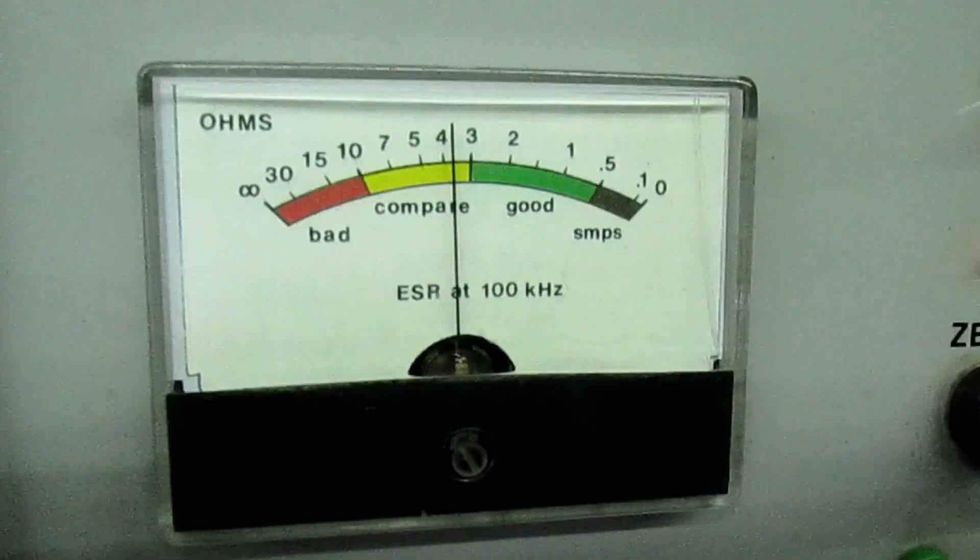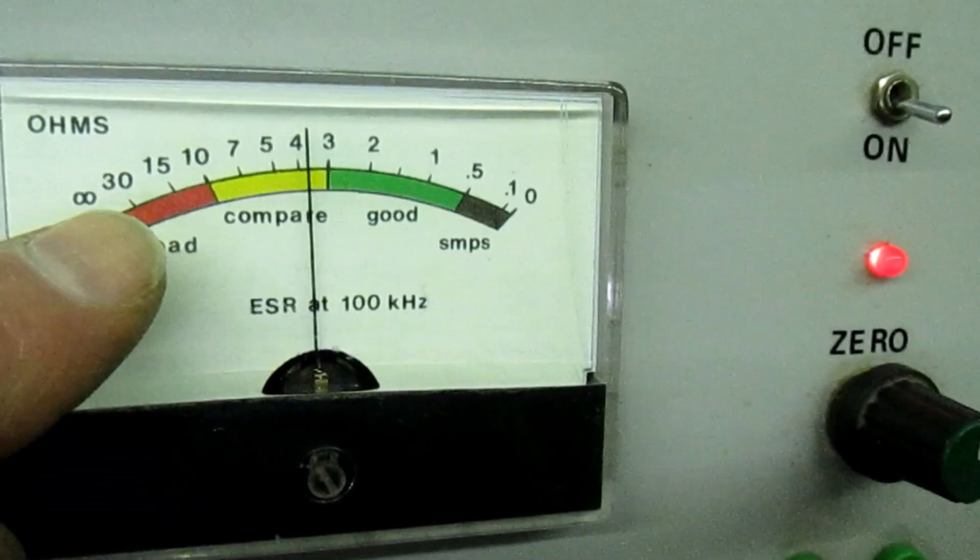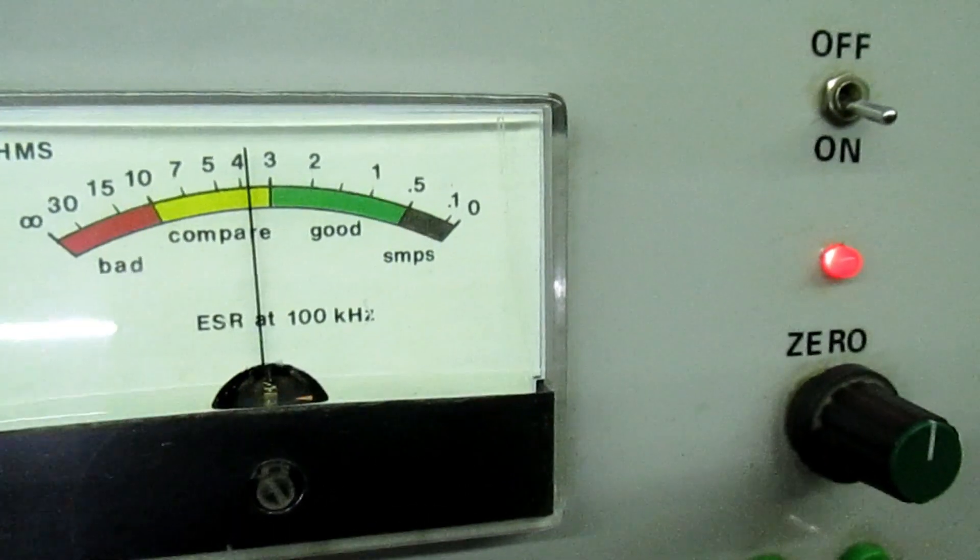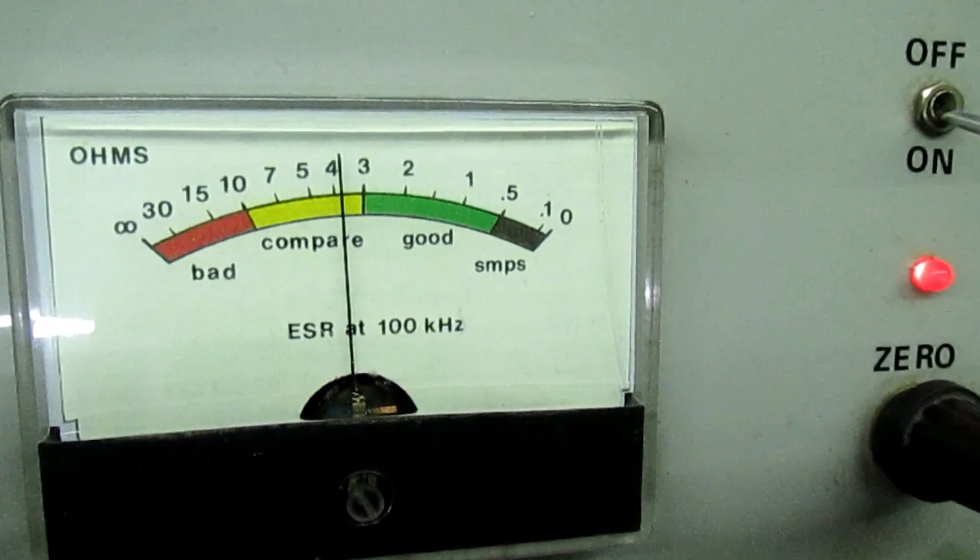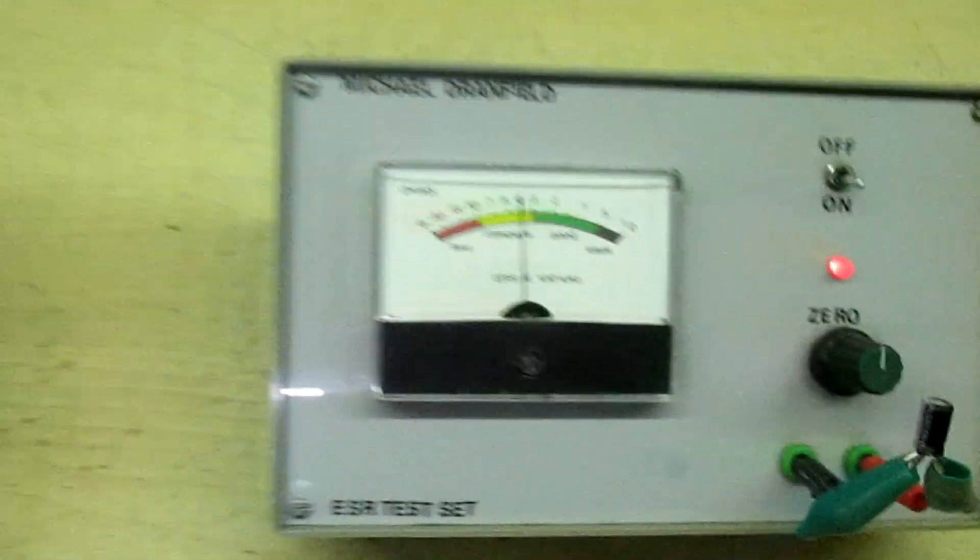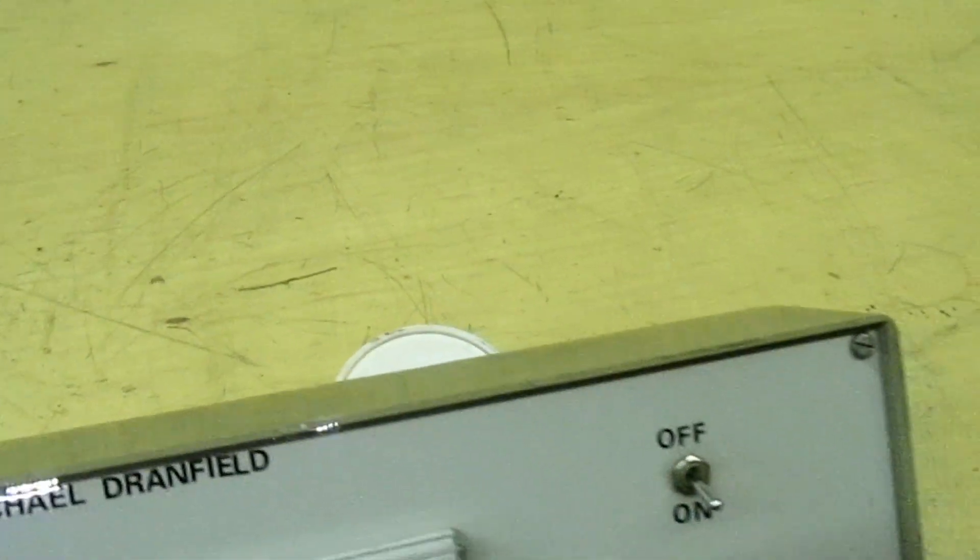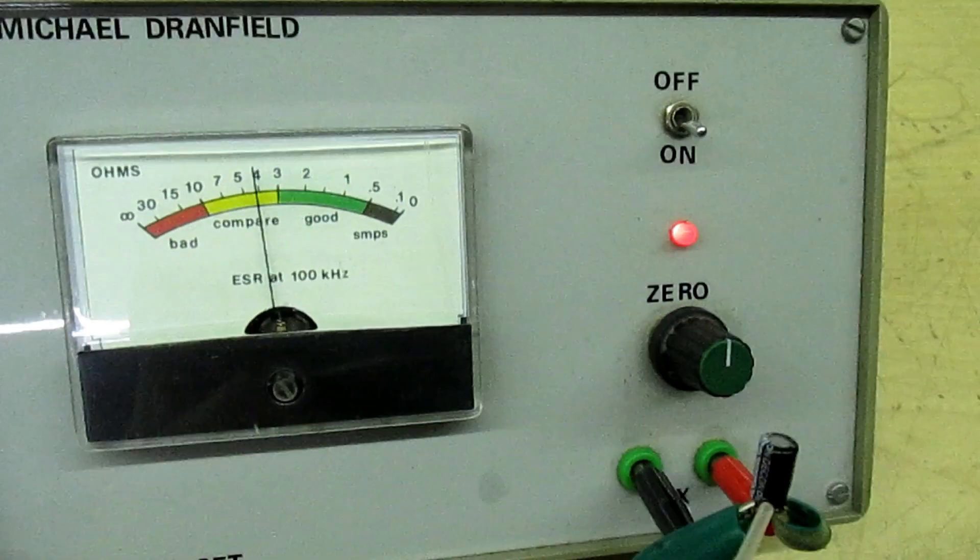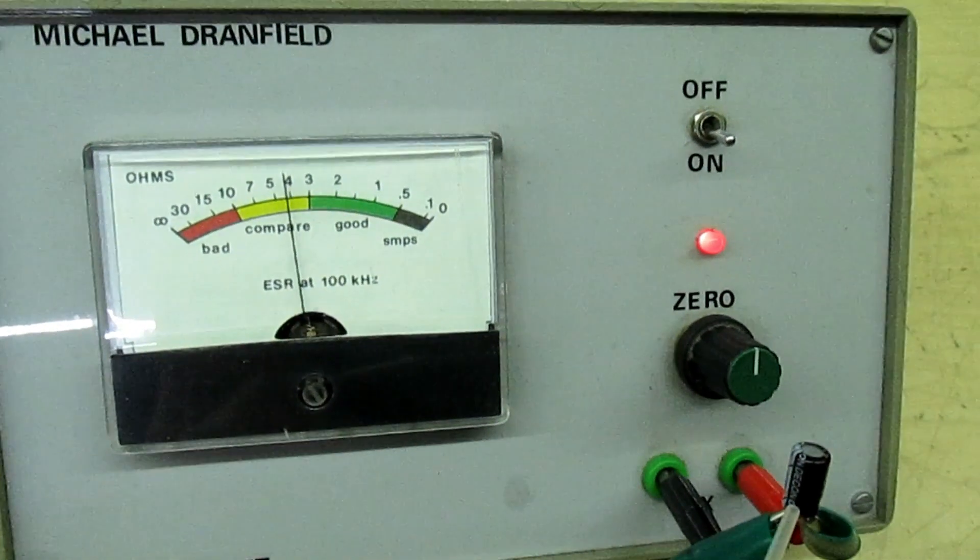Now if you look at that, the ESR that was about 18 ohms is now only just over about 3.8. And if I take the tin of freezer and cool the capacitor down, let's get it in the camera.